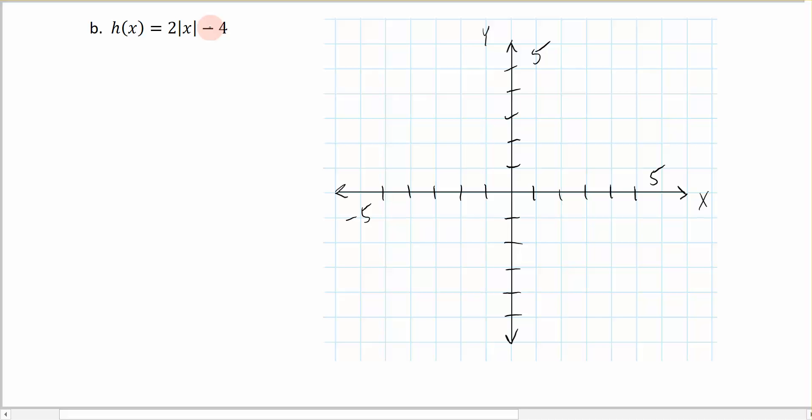So the first thing to do is you have to identify what that parent function is to know what you're shifting around. My parent function is the absolute value of x. And here I started in green again. I want it to be blue for some reason.